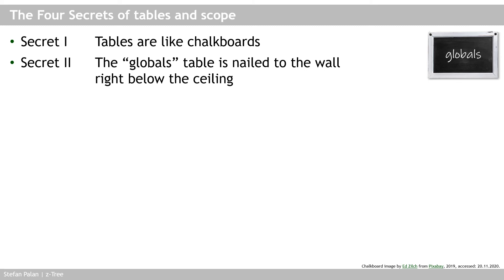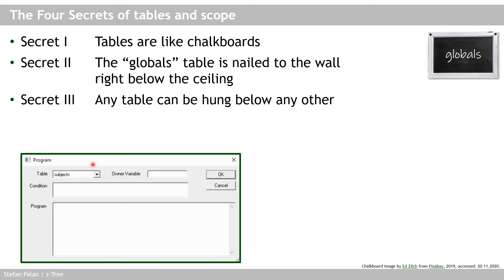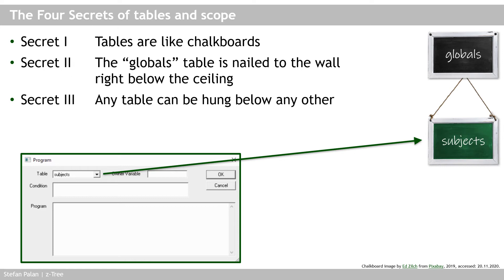Secret two: this chalkboard represents the globals table, and it is nailed to the wall right below the ceiling — literally at the top, with nothing above it. Secret three: any table can be hung below any other. All other tables in Z3 are on chalkboards with a piece of string, which can be used to hang them below the globals table or any other chalkboard. The easiest way to hang a chalkboard in Z3 is to insert a new program — by default, it runs in the subjects table.